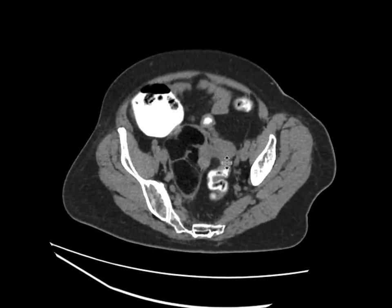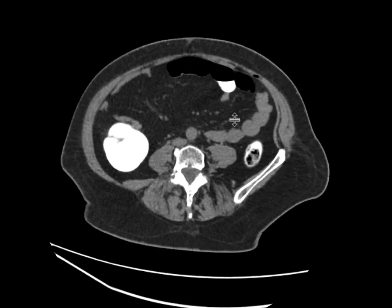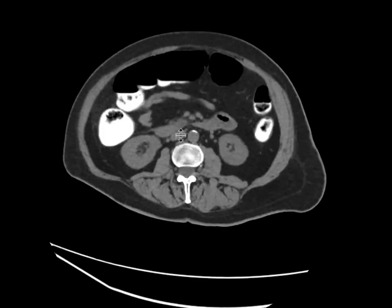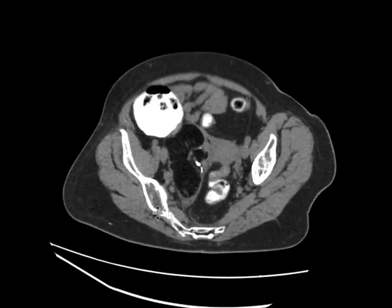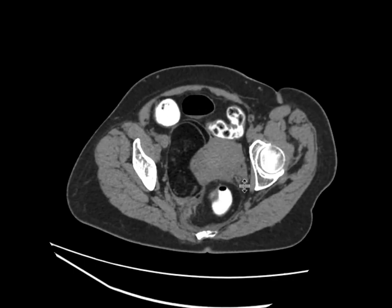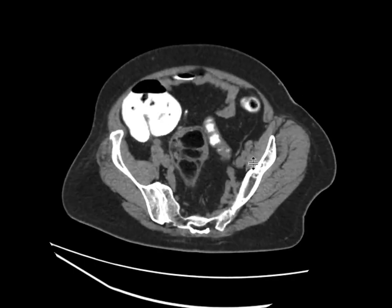This is the uterus over here, and if we follow the gonadal vessels on the right side — here it is — draining into the IVC, and following it downwards, it goes right into this mass. And so this is a large right ovarian dermoid.